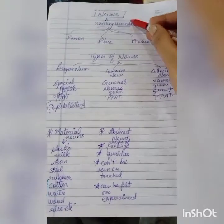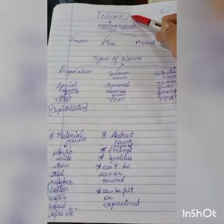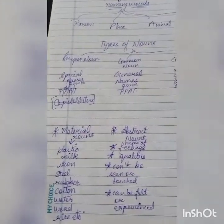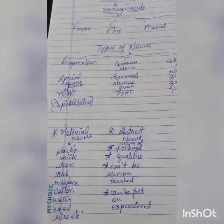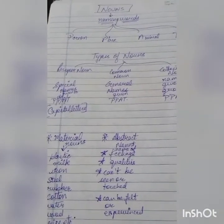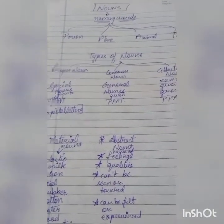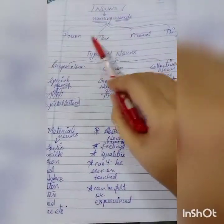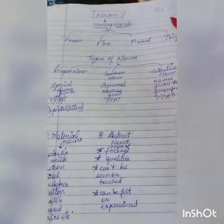Noun. Grammar. Nouns — what are nouns? Nouns are naming words. Only two words may answer: naming words. Kiska name hai? Person, place, animal, thing.